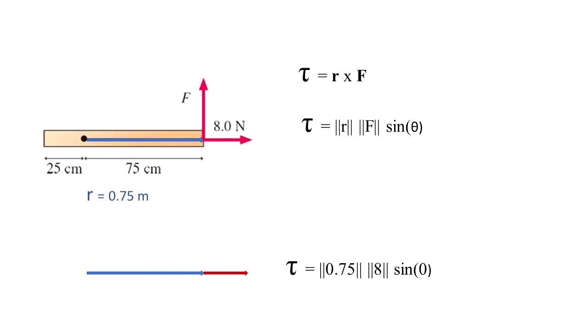So you can see here that R and F for the case of the 8N is in the same direction. Both are in the same direction. That means that the angle between them is zero and sine of zero is equal to zero. That's the reason why for the force of 8N we have no torque.